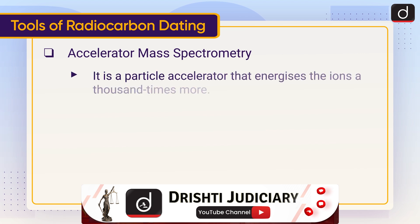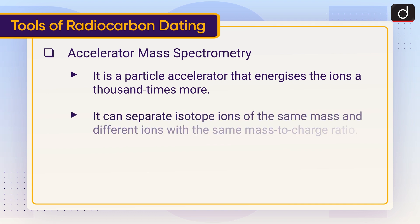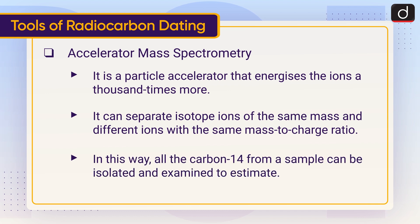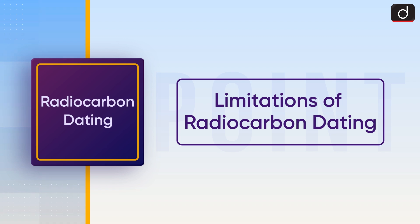Accelerator mass spectrometry is a particle accelerator that energizes the ions a thousand times more. It can separate isotope ions of the same mass and different ions with the same mass-to-charge ratio. In this way, all the carbon-14 from a sample can be isolated and examined to estimate its age. Now moving on to the limitations of radiocarbon dating.